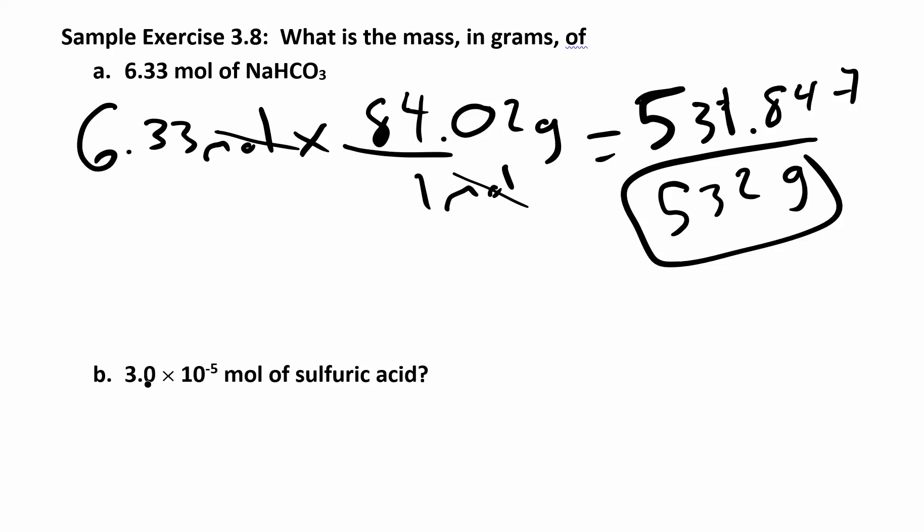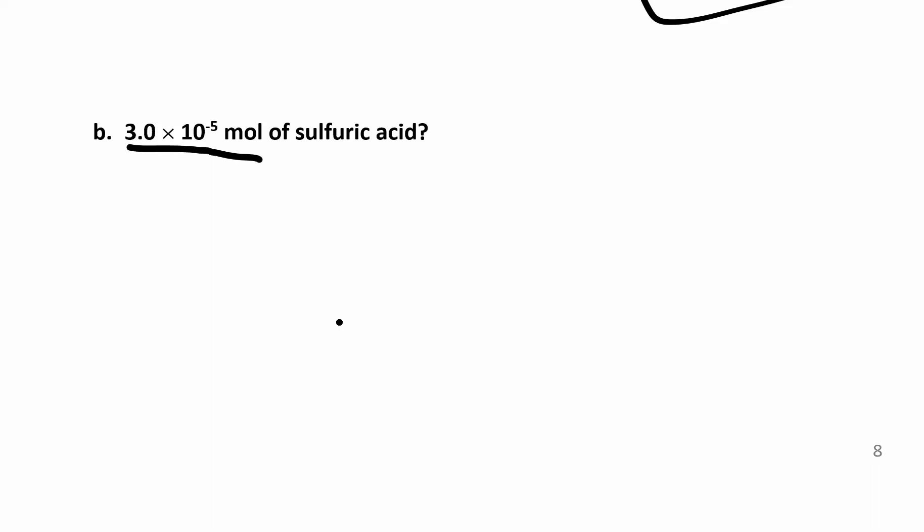Now we have a different example. We have 3.0 times 10 to the negative 2 moles of sulfuric acid. You have to take that name and figure out what the formula looks like and then calculate the molar mass. It's an ick acid. Ick acids come from ate. Sulfuric acid, all acids have a hydrogen in front of it. This is coming from sulfate, which is SO4 with a 2 minus. And this is a plus. So when you crisscross, you get H2SO4.